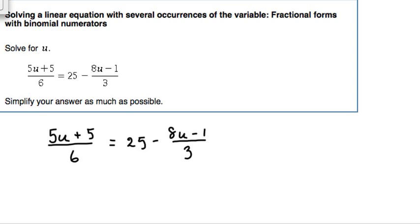We have some fractions here and we'd like to simplify this equation a little bit to make it easier to work with. So what we're going to do is find the least common multiple of the denominators 6 and 3, and the least common multiple of 6 and 3 is 6.